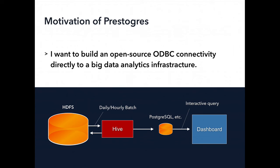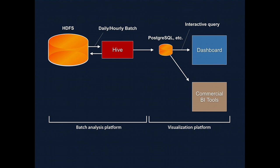The problem is that we provide a data analytics platform, but this platform did not have ODBC connectivity before. I wanted to build an open source ODBC connectivity directly connected to the big data analytics platform. This is a very typical architecture of big data analytics: people have data on distributed storage such as HDFS, Amazon S3, or Google Cloud Platform, and they use Hive, based on Hadoop MapReduce, to run SQL queries. Original data is often schema-less and unstructured, but the query converts it into structured format and joins with other data sources, then dumps aggregated results into PostgreSQL.